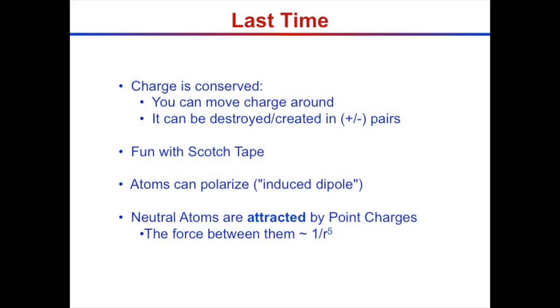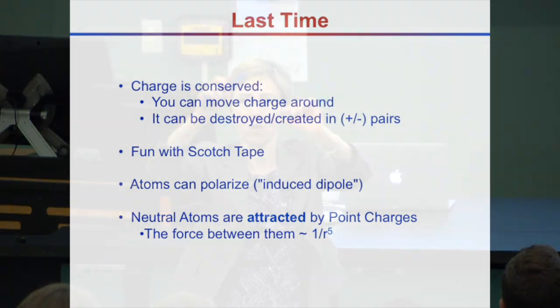A single point charge gives off an electric field that falls off like 1 over r squared. The electric field of a dipole falls off like 1 over r to the third. So these two together — an induced dipole with a point charge — fall off like 1 over r to the 5th, essentially the multiplication of 1 over r squared times 1 over r cubed. That's why neutral objects are attracted to charged objects: induced polarization.